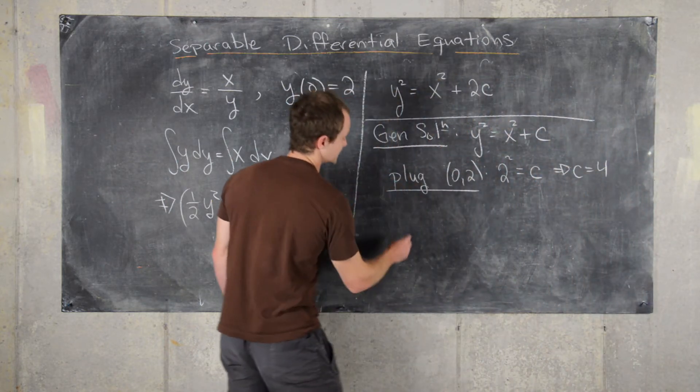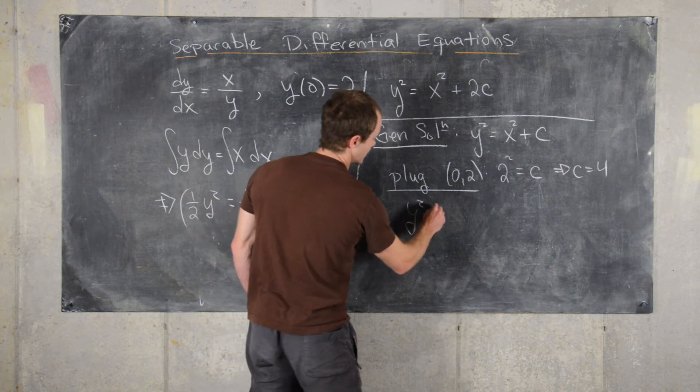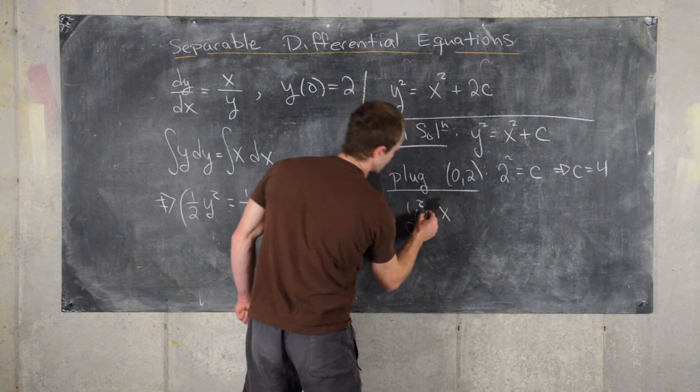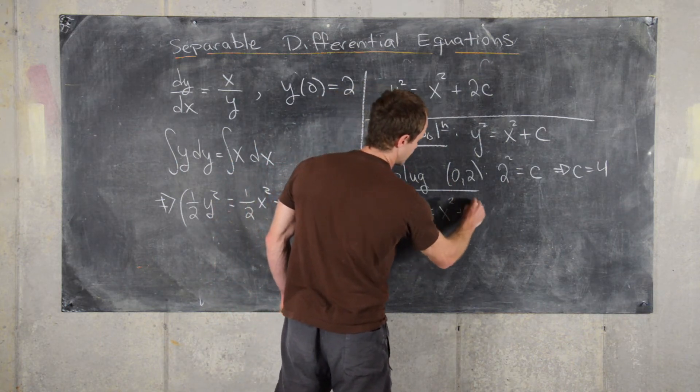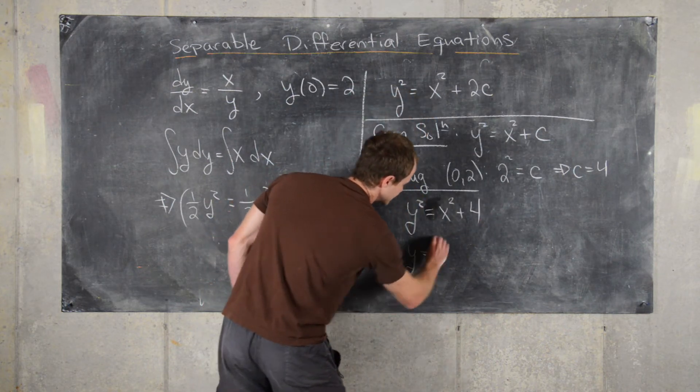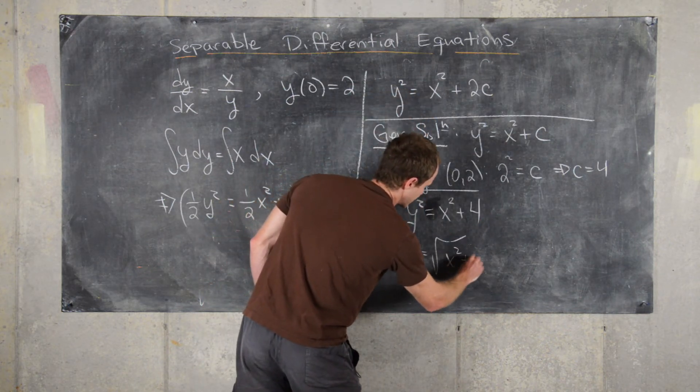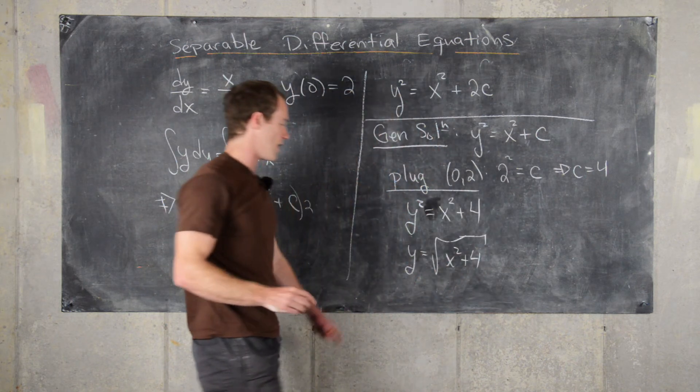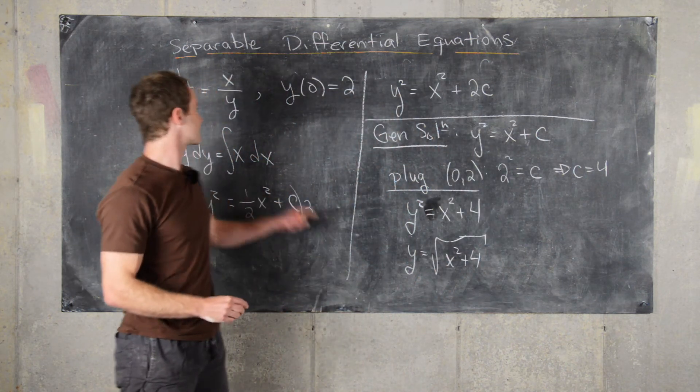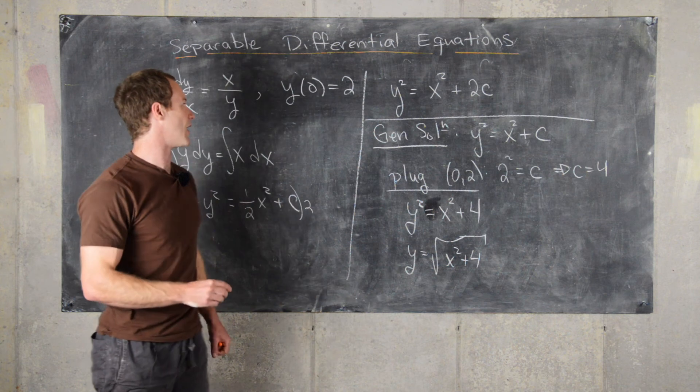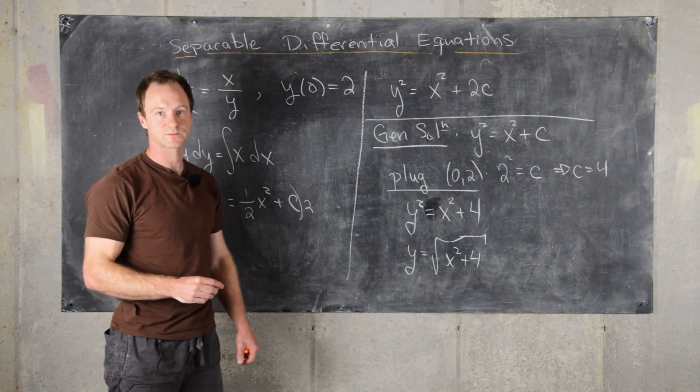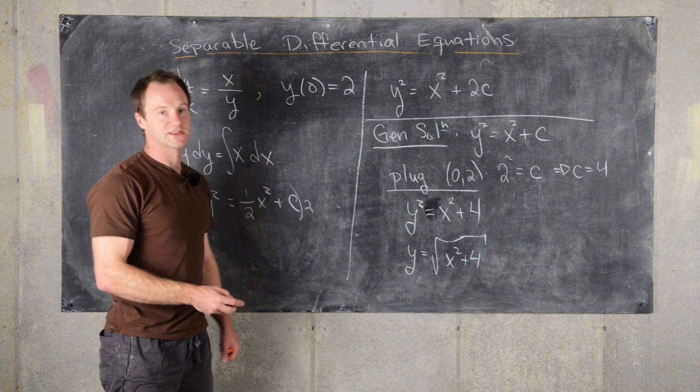That gives us y² = x² + 4, or y = √(x² + 4). I know that I can take the positive square root because I'm getting a positive output for this y value. This is the final answer.